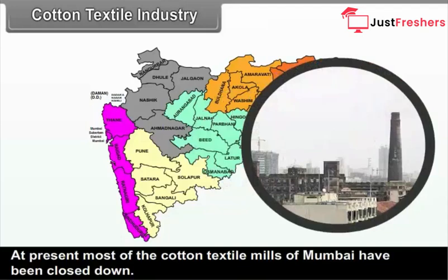Distribution of cotton textile industry: A. Nagpur and Amravati Division — as raw material is amply and easily available, cotton textile mills were set up at Nagpur, Hinganghat, Akola, Pulgao, Badnera and Achalpur in the Vidarbha region. B. Nasik Division — the Taapi Basin region is well known for cotton production, so mills were set up at Jalgao, Chalisgao, Dhule and Amalner in the Khandesh region.